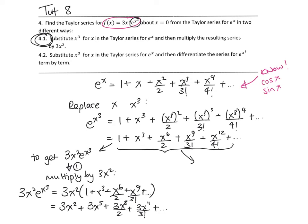But there's another way we could find it by noting that if we take the derivative of e^(x³), we get 3x²e^(x³), which is the function we were interested in. This tells us that if we take the derivative of our Taylor series for e^(x³), we should get the Taylor series for 3x²e^(x³).